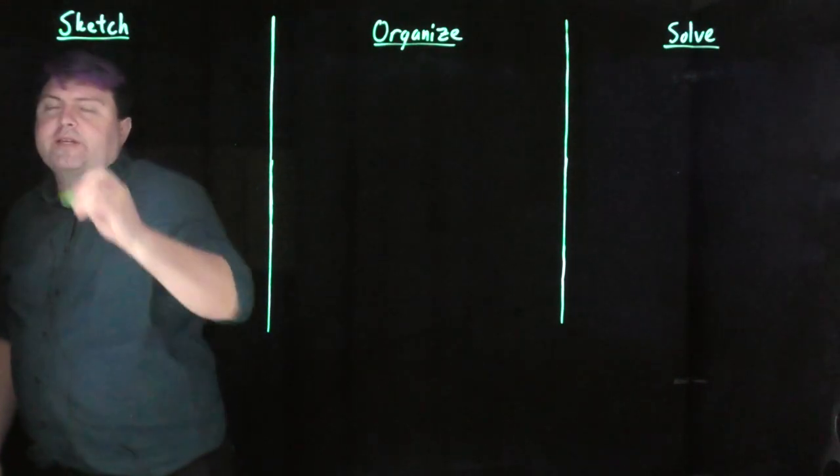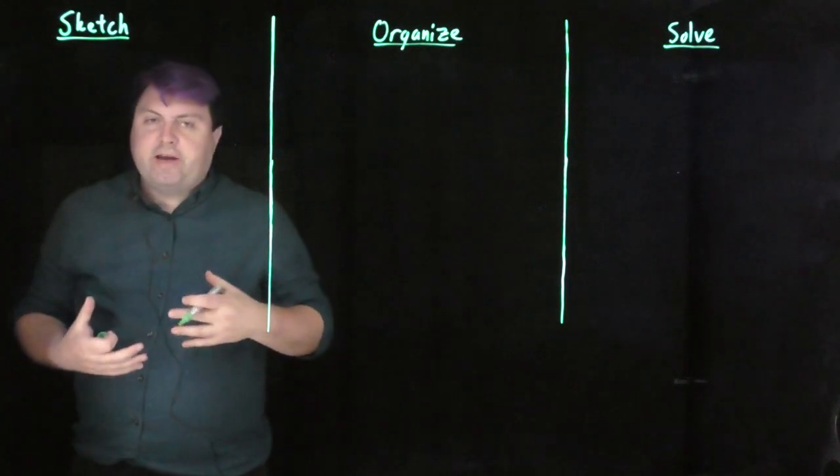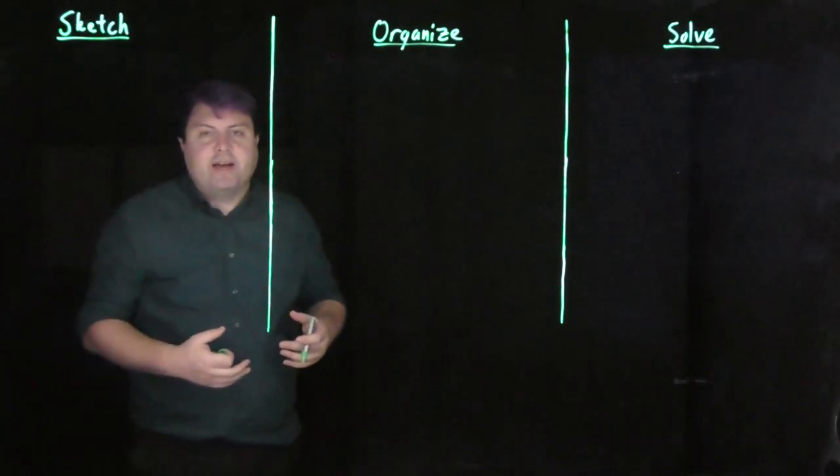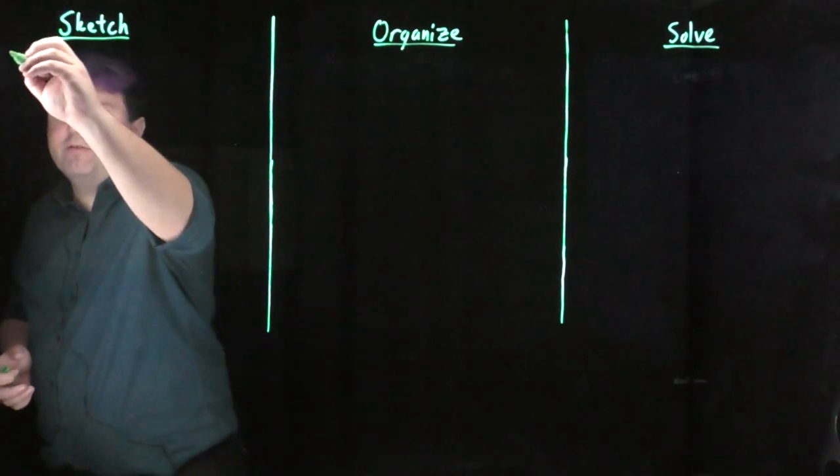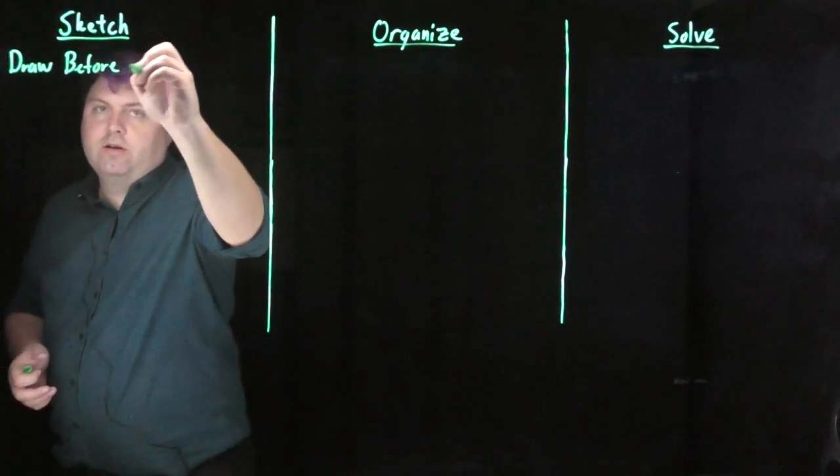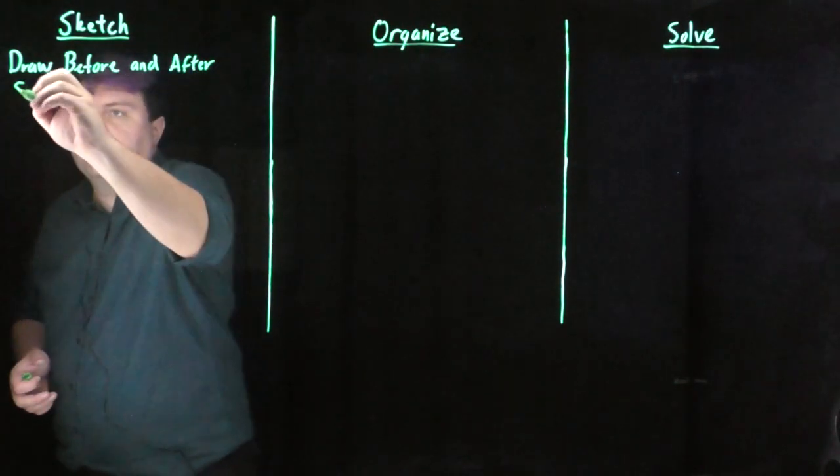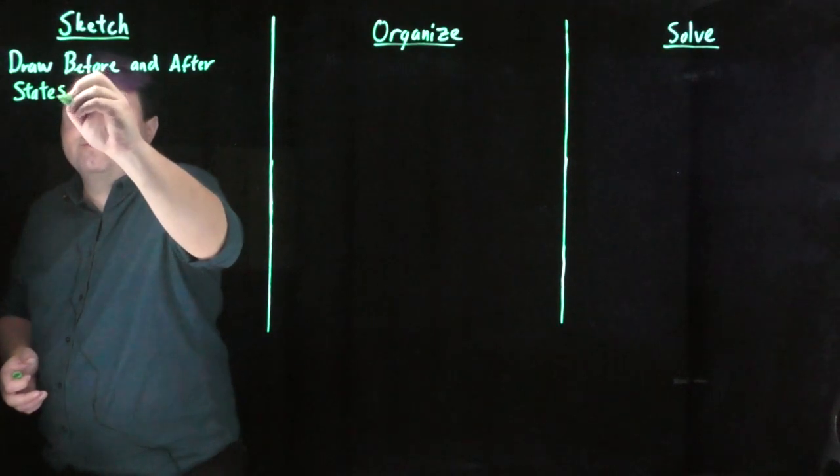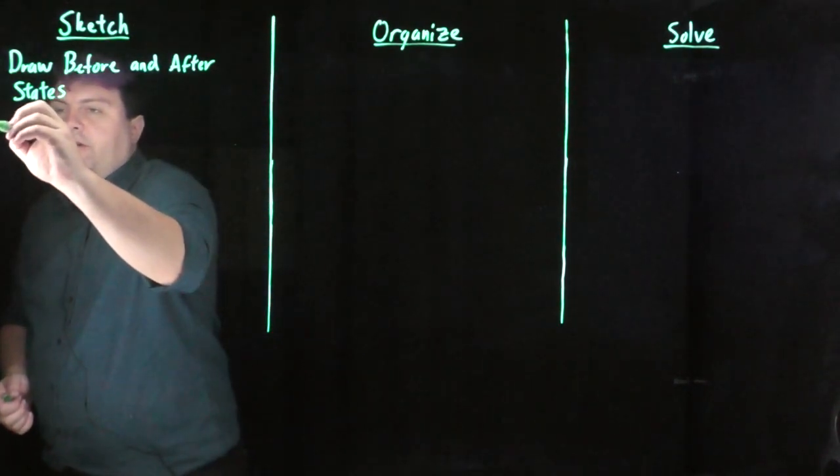So with our sketch thing, it's similar to linear momentum in that we're going to have collisions, explosions, things like that. It's very much a before versus after, so our first sketch is we want to always draw before and after states to understand what's going on that we are talking about.